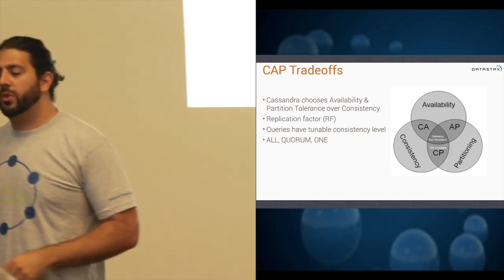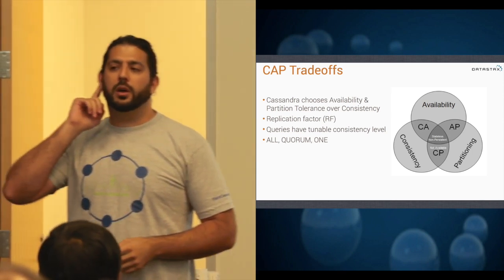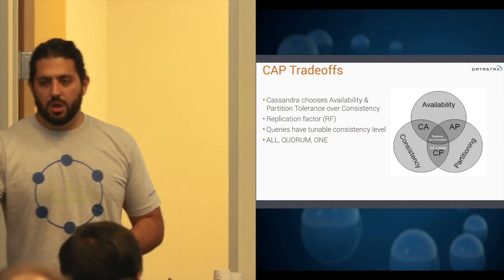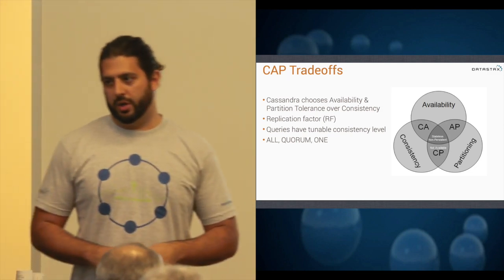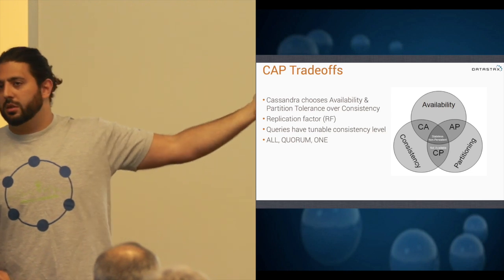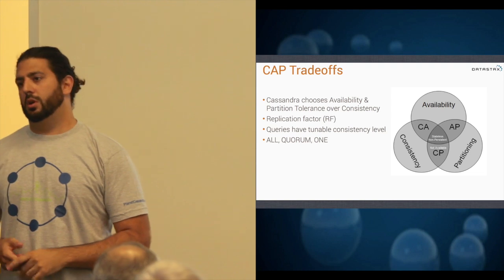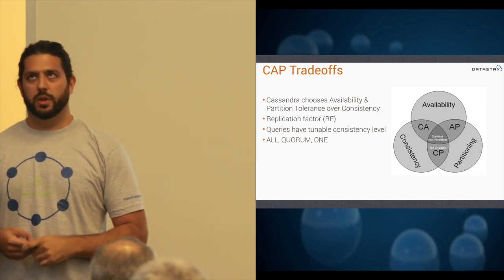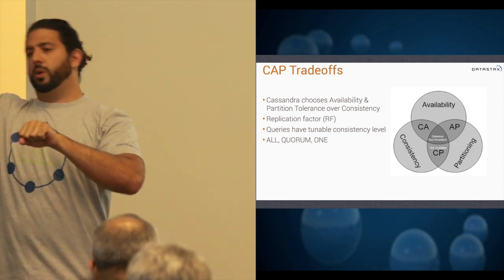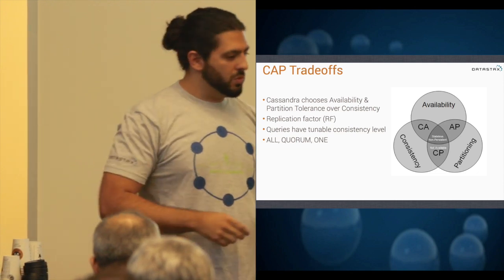Quorum is a simple majority of the replicas. There are other query consistency levels I didn't list — like you can query any, one, two, and within your data centers you can query for global quorum. So you can actually have it query other data centers as well, or you can just say stay in this one data center for performance.